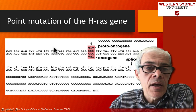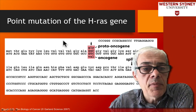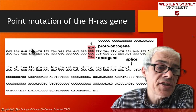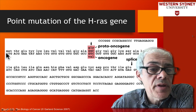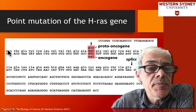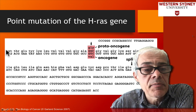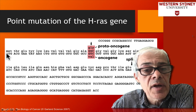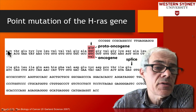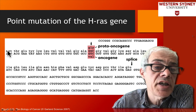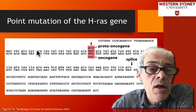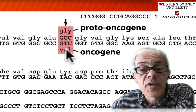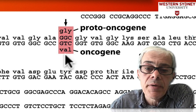Here we have the first exon of the human RAS gene. It starts with ATG — the first methionine of the sequence — so this is the start of the first exon. If you count 12 codons in, the 12th codon is where the key mutation occurs.